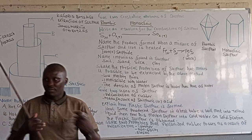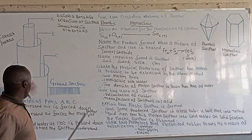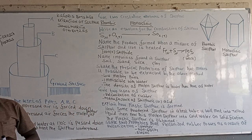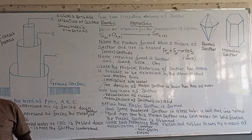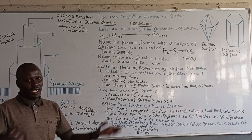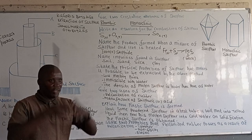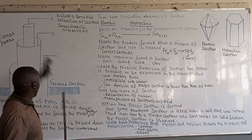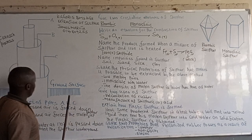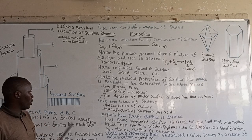The impurities found in sulfur during the Frasch process: you can talk of sand, you can talk of soil, you can talk of clay, or you can talk of silicon. Those are some of the impurities normally found in sulfur during extraction through the Frasch process.